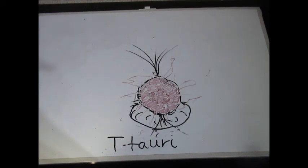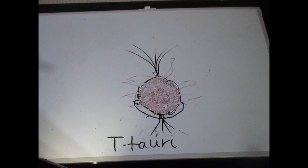A T-Tauri star will be surrounded by a circumstellar disk, also known as an accretion disk. This structure is formed by diffuse material in orbital motion around the star, a ubiquitous feature of massive central bodies.